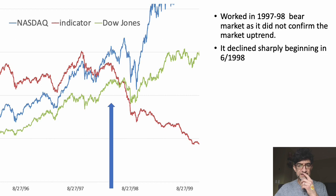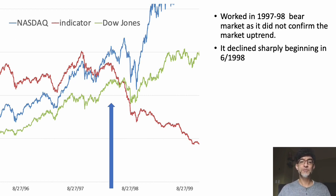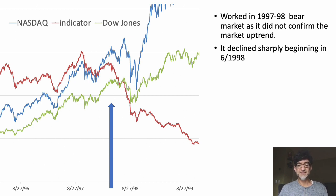The next one is the 1997-98 bear market. My notes say it did not confirm the market uptrend. Remember, if the indicator is not moving with the market, that's a bad thing. This is a good example where it was declining before the market declined. It declined sharply beginning in June 1998, and even before that it didn't seem to be confirming the indexes going up. That's what we want to see — where it's not confirming what the bellwether index like the Dow Jones is saying.